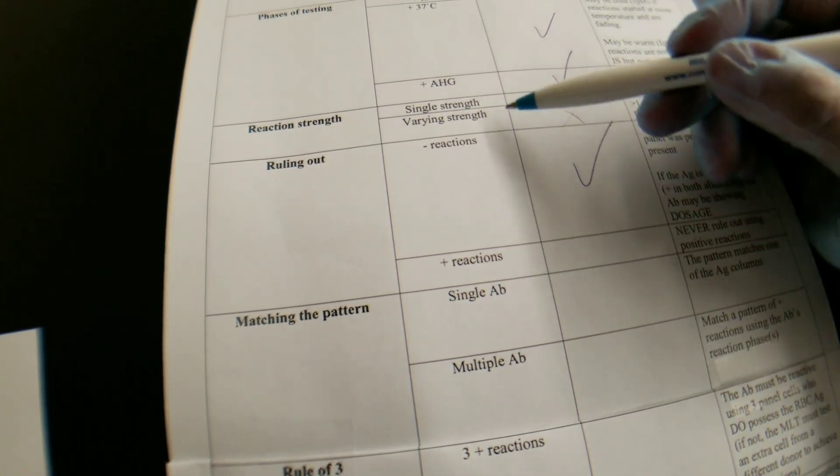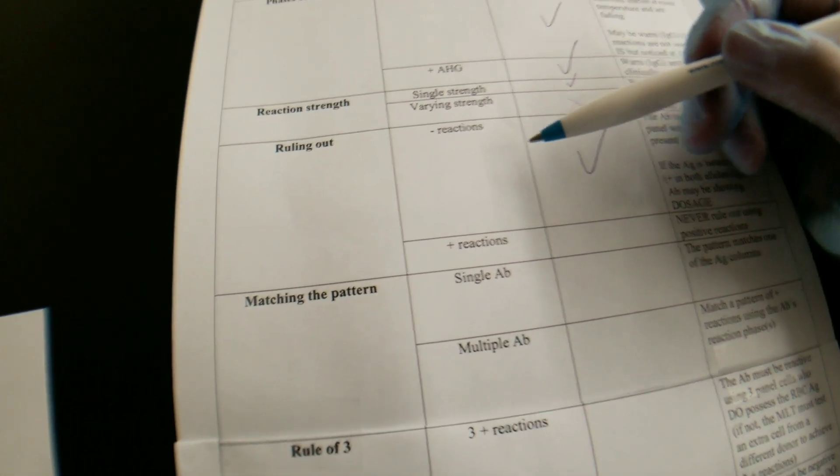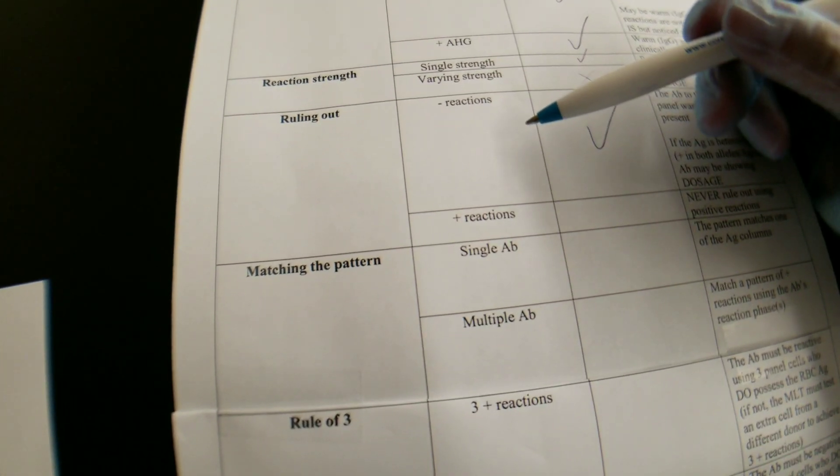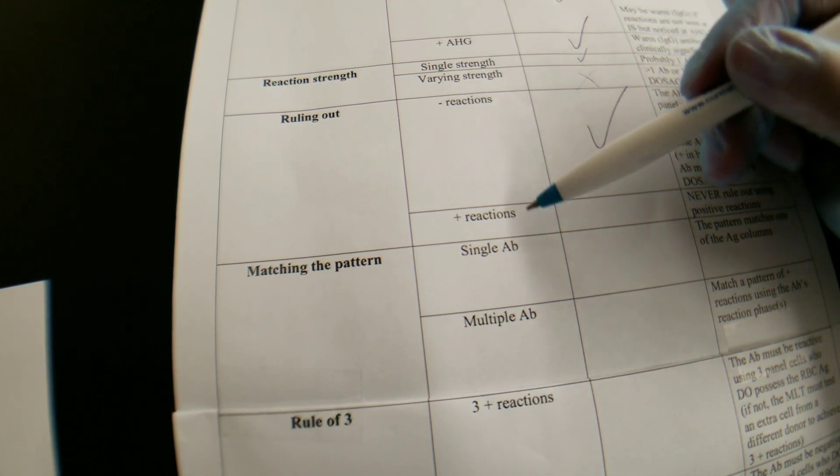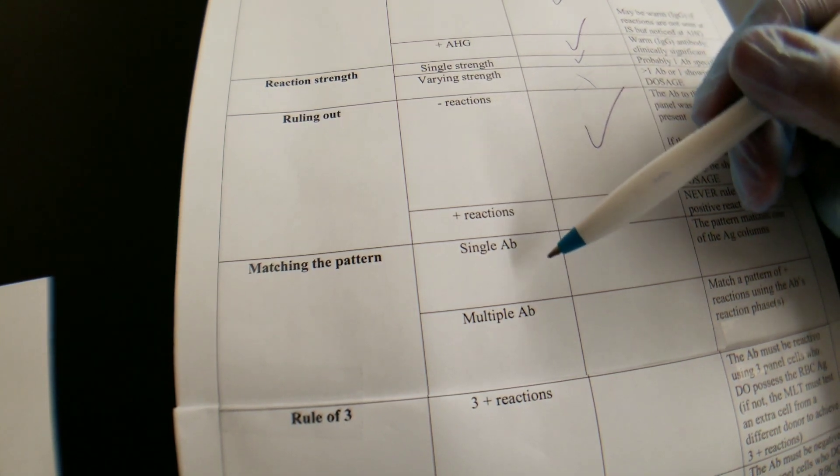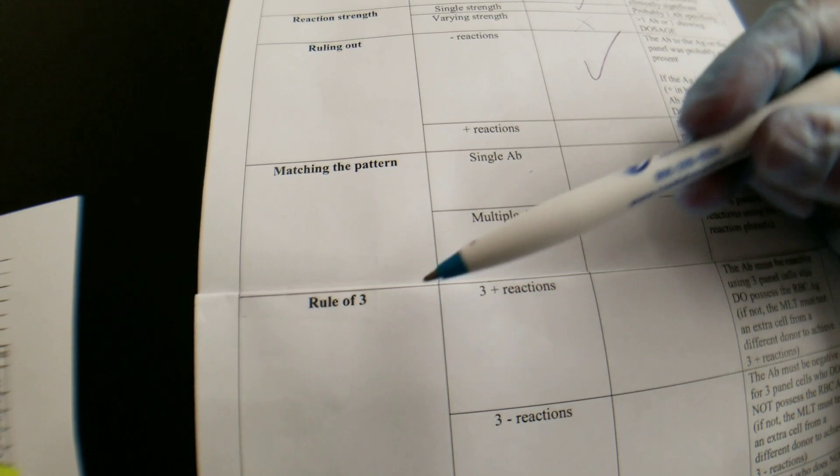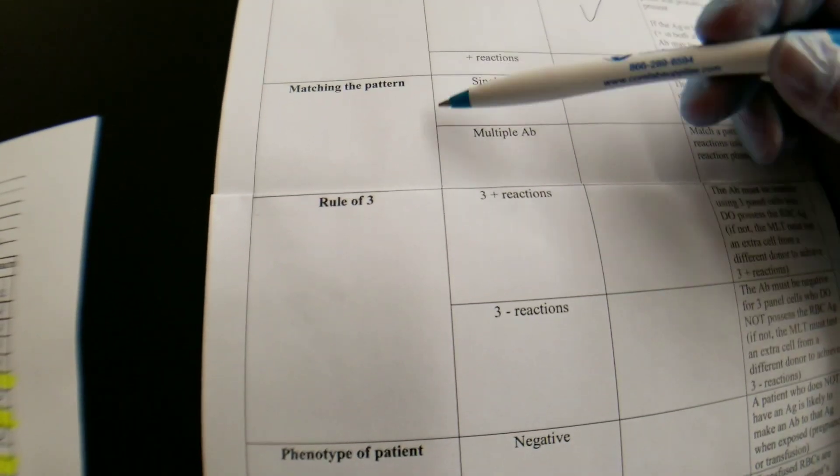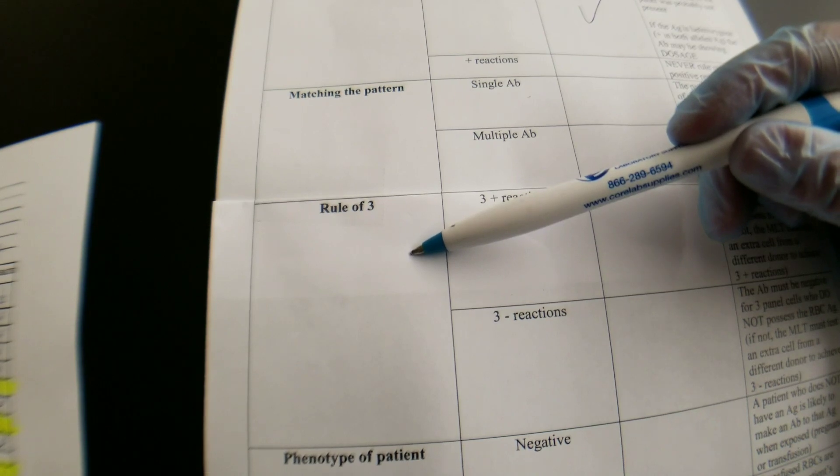Okay, so we can kind of just not use that one. So crossing it off, it would be the single strength. So the next thing we're going to need to do is to rule out and rule in negative reactions and positive reactions. So then we'll match a pattern. Excuse me, we already did that. I was expecting that to be here. So the next thing we're going to do is try to match a pattern and try to do the rule of three.